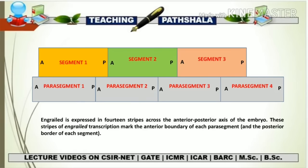The same rule is going to apply with each and every segment and parasegment. One parasegment is going to have involvement of two segments — parasegment two, for example, overlaps with a posterior part of segment one and some part of segment two. In the last line I have mentioned that engrailed is expressed in 14 stripes across the anterior-posterior axis of the embryo. These stripes of engrailed transcription mark the anterior boundary of each parasegment and the posterior border of each segment. I think now you understand why I removed the parasegment word from my previous slide, because one factor is responsible for giving rise to polarity to both the segment as well as the parasegment.